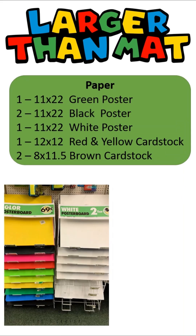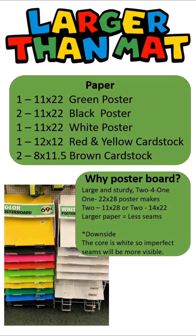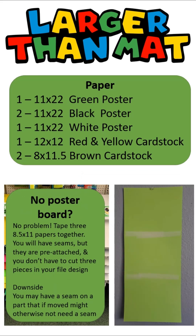I'm using green, black, and white poster board. I could have also used red and yellow, but I didn't need it so large, so I used a 12 by 12 and two brown pieces of 8 by 11. Why poster board? These are larger than mat, so the larger and sturdier the paper, the better. Also, I get a two-for-one — they're pretty cheap. One 22 by 28 poster I can cut in half and make either two 11 by 28 or two 14 by 22s. The larger the paper you have, the fewer seams you have. The one downside is that the core of the paper is white, so any imperfections in the seam make it more visible. If you don't have poster board, you can tape three regular 8 by 11 pieces of paper together. When it cuts, they will have seams, but they'll be less visible and already pre-attached — and you don't have to configure these extra cuts into your design project.